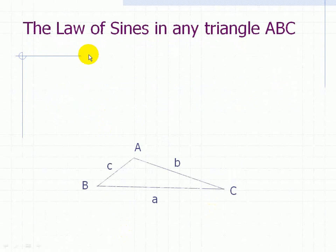Let's say we're given this triangle A, B, and C, and its associated sides little a, little b, and little c. And we're going to derive the Law of Sines in any triangle ABC shown here.